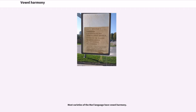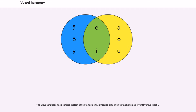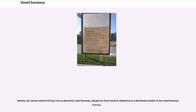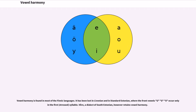Most varieties of the Mari language have vowel harmony. The Erzya language has a limited system of vowel harmony involving only two vowel phonemes. Moksha, the closest relative of Erzya, has no phonemic vowel harmony, though it has front and back allophones in a distribution similar to the vowel harmony in Erzya. Vowel harmony is found in most of the Finnic languages. It has been lost in Livonian and in Standard Estonian, where the front vowels Ü, Ö occur only in the first syllable. Võro, a dialect of South Estonian, however retains vowel harmony.